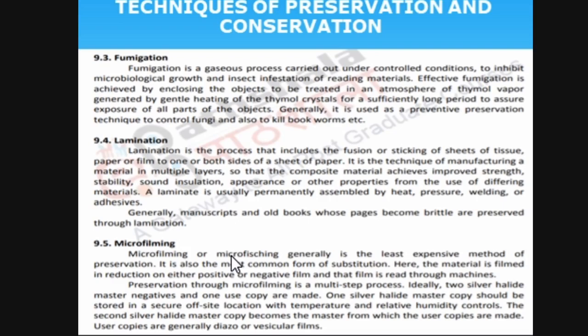Lamination — we all know what lamination is. It involves sticking off sheets or tissue over the paper. Microfilming is also known — it is a less expensive method. In the earliest days, they would have a cyclic type of film and roll a handle to film screen by screen. Now we use digital filming, but earlier it was microfilming. Two silver negatives and one copy are made. This is the microfilm — it is stored in the form of a film.